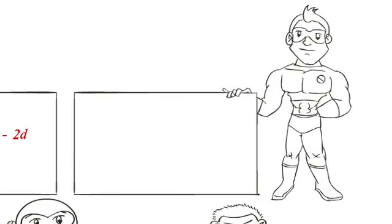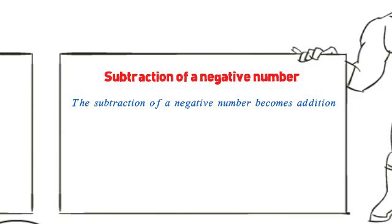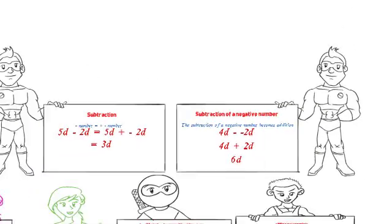The only new thing we will learn is the subtraction of a negative number. The subtraction of a minus number is addition. Example, we have 4d minus negative 2d. The minus negative 2d can be written as plus 2d. So, we now have 4d plus 2d. This is equal to 6d.